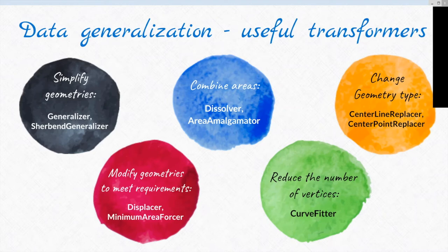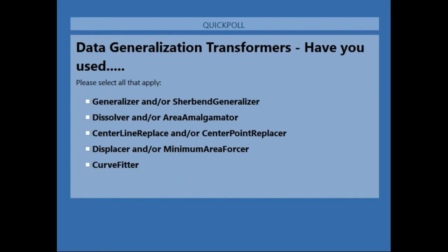The poll results are coming in. The dissolver or area amalgamator got the highest percentage — about 60% of people have used one or both. Generalizers and center line or center point replacers came in second. The displacer and minimum area and curve fitter are at about 7%. The difference between the generalizer and Churband generalizer: the regular generalizer has lots of options but sometimes isn't smart enough for certain cases. The Churband generalizer is constraint-based — you can enforce things like a point staying on the same side of a feature as before.